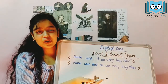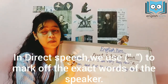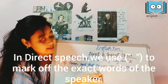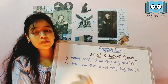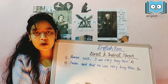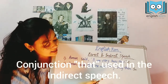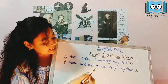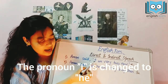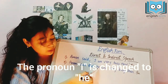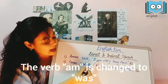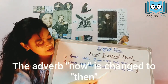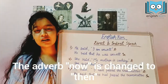In direct speech, for marking the exact words of the speaker, we always use inverted commas. In indirect speech, we use the conjunction 'that', the pronoun 'I' is changed to 'he', the verb 'am' is changed to 'was', and the adverb 'now' is changed to 'then'.